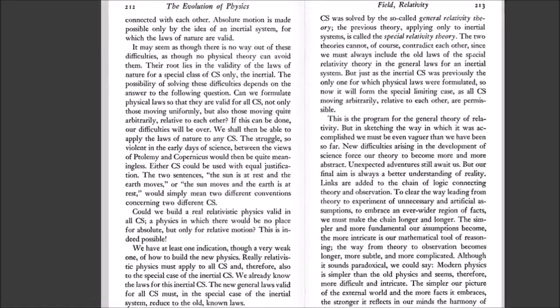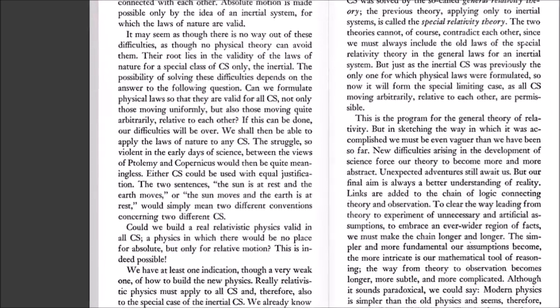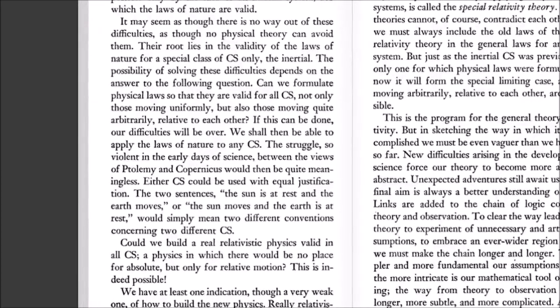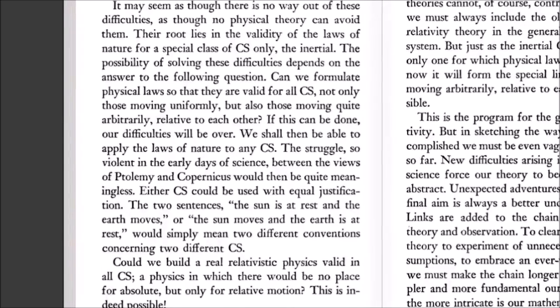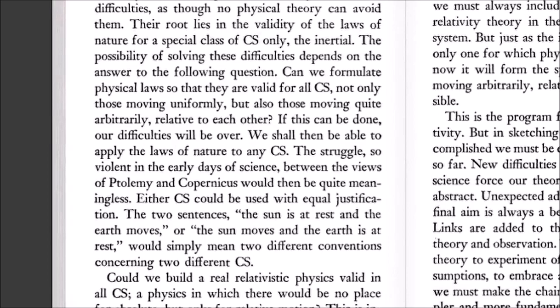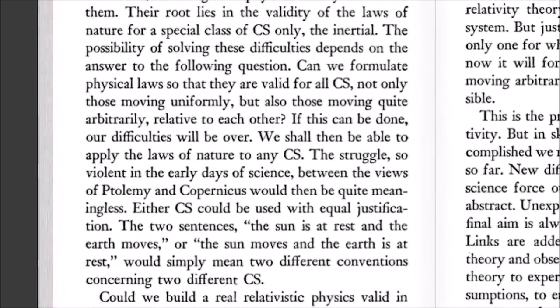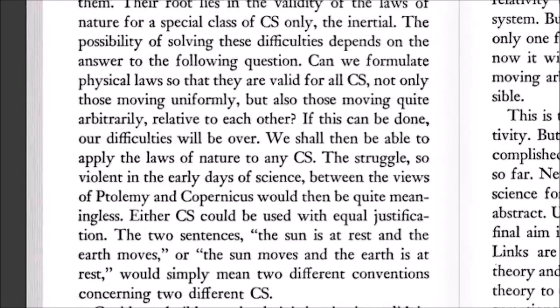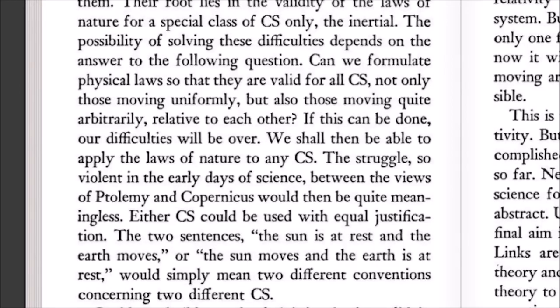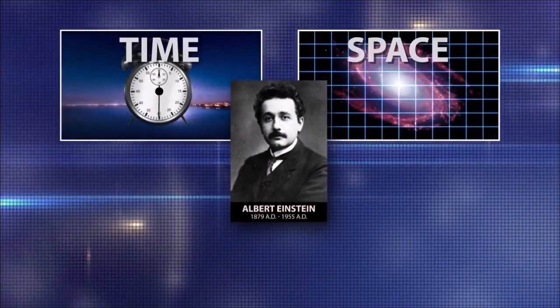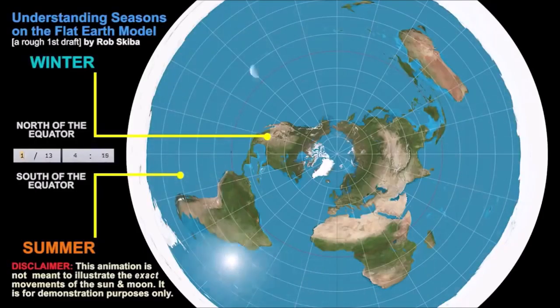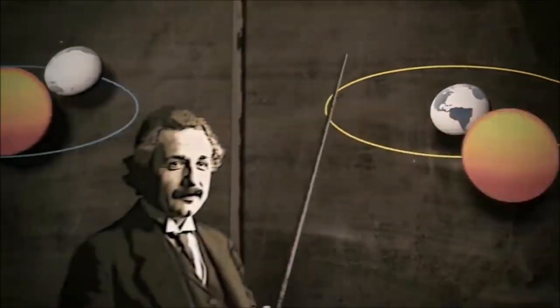Hence Einstein would admit in 1938. The possibility of solving these difficulties depends on the answer to the following question. Can we formulate physical laws so that they are valid for all coordinate systems, not only those moving uniformly, but also those moving quite arbitrarily relative to each other? If this can be done, our difficulties will be over. We shall then be able to apply the laws of nature to any coordinate system. The struggle so violent in the early days of science between the views of Ptolemy and Copernicus would then be quite meaningless. Either coordinate system could be used with equal justification. The two sentences, the sun is at rest and the earth moves, or the sun moves and the earth is at rest, would quite simply mean two different conventions concerning two different coordinate systems. That is, he will employ arbitrary coordinate systems to make the absolute state, a fixed earth, into where either coordinate system can be used, a fixed earth or a moving earth. All the coordinate systems are created mathematically out of thin air by using the transform equation.